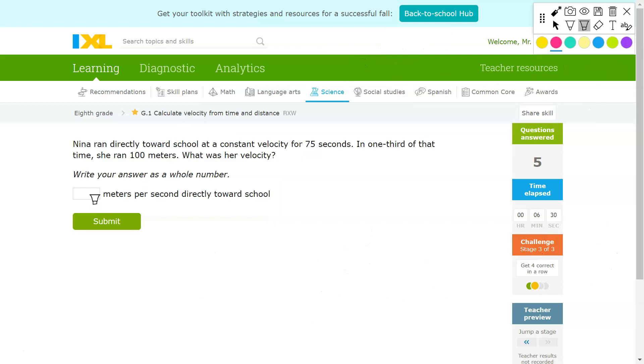Next question. Once again, 75 seconds, 100 meters, one third of that time. Let's see what the question is asking. What was her velocity in one third of that time? This is distance, this is time. It's saying only one third of that time was useful. So you have to divide the time by 3. 75 divided by 3 equals 25 seconds.